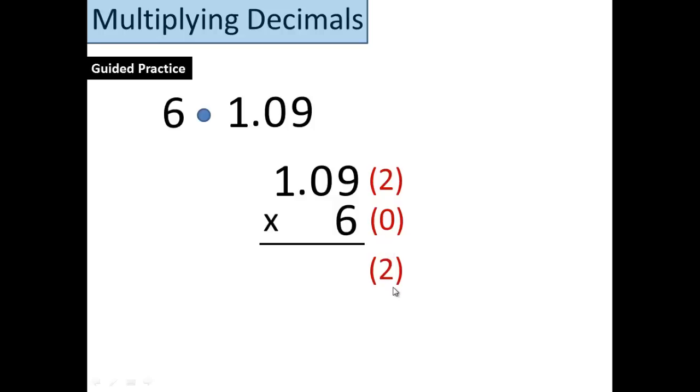Now we can do our multiplication. You can put the sum down here first if you want. 9 times 6 is 54. Keep the 4. Bump the 5. 6 times 0 is 0 plus 5 is 5. 6 times 1 is 6. Slide, slide, slippery slide. It's time for the decimal to take a ride. We go 1, 2. Move that decimal.